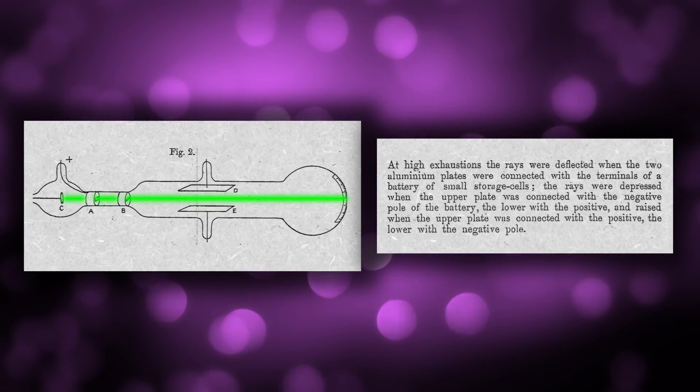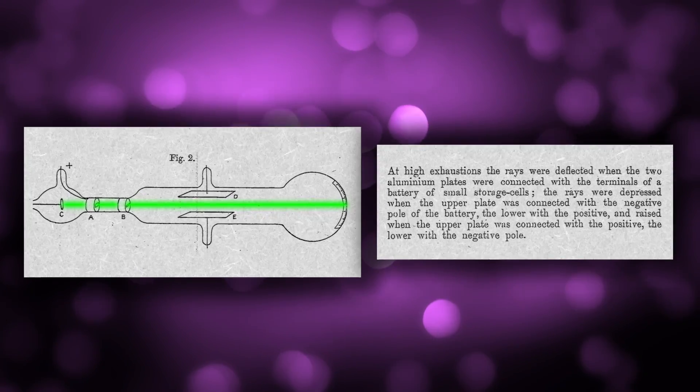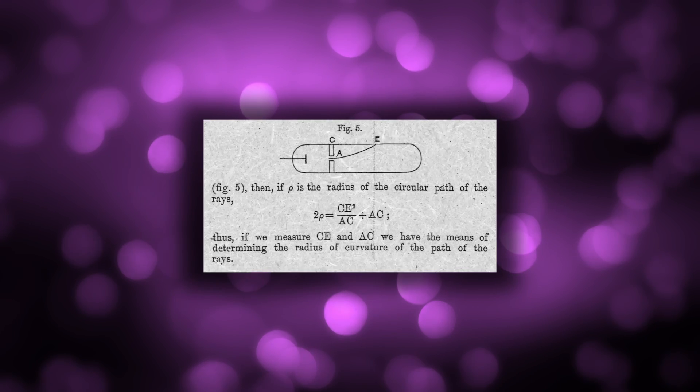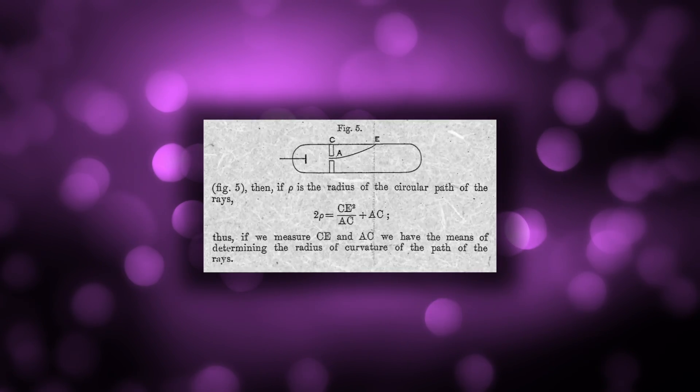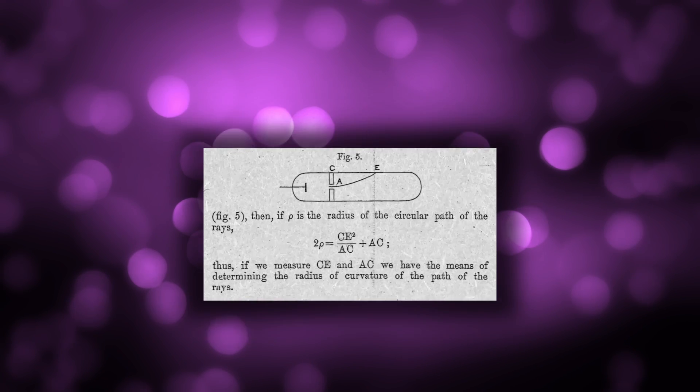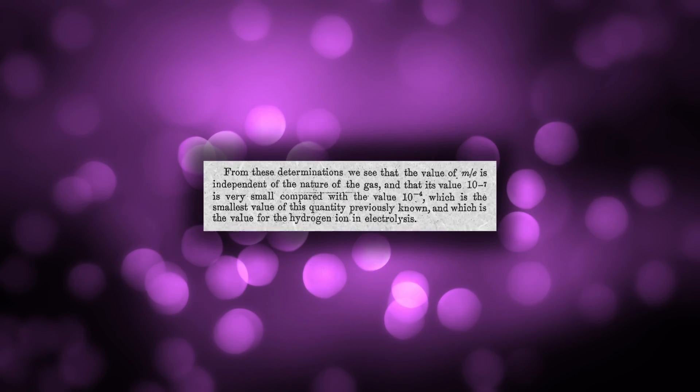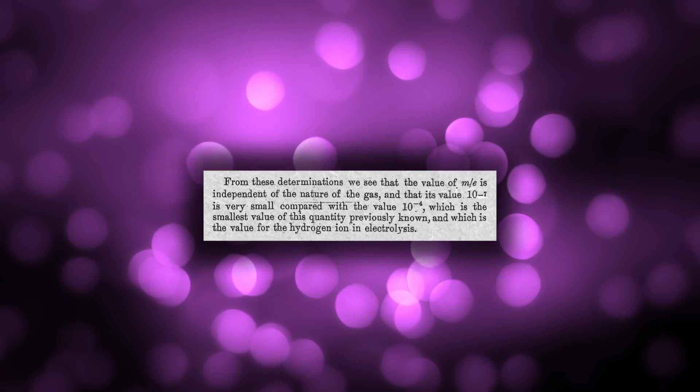The most interesting part of all of this, though, was Thompson's estimates for the size of these particles. By measuring the radius of the curved path of the cathode rays and the amount of heat they transferred to the electrodes, he was able to use some very elegant calculations to show that the particles were around a thousand times lighter than the hydrogen atom, which, up until that time, was thought to be the smallest unit of matter.